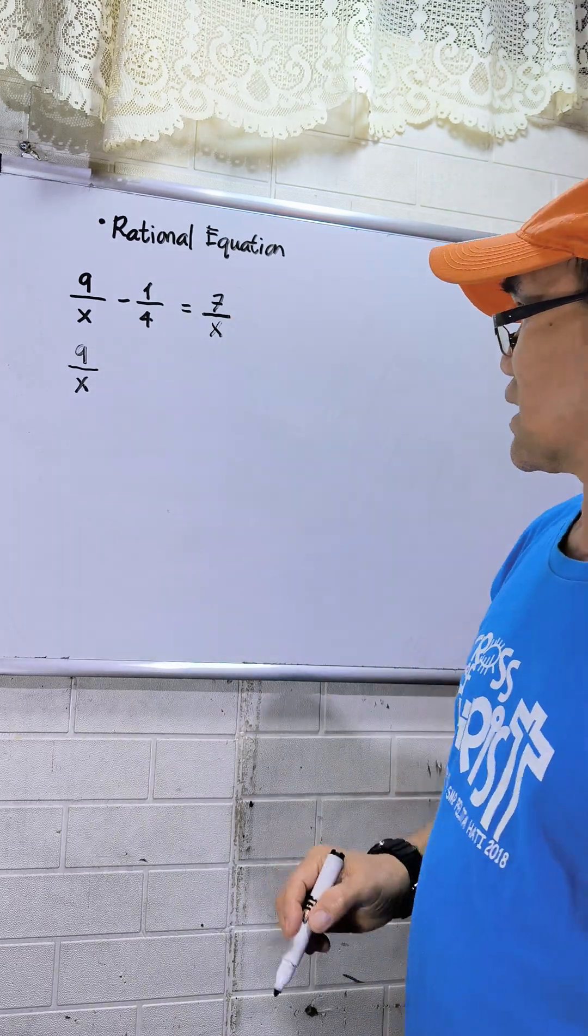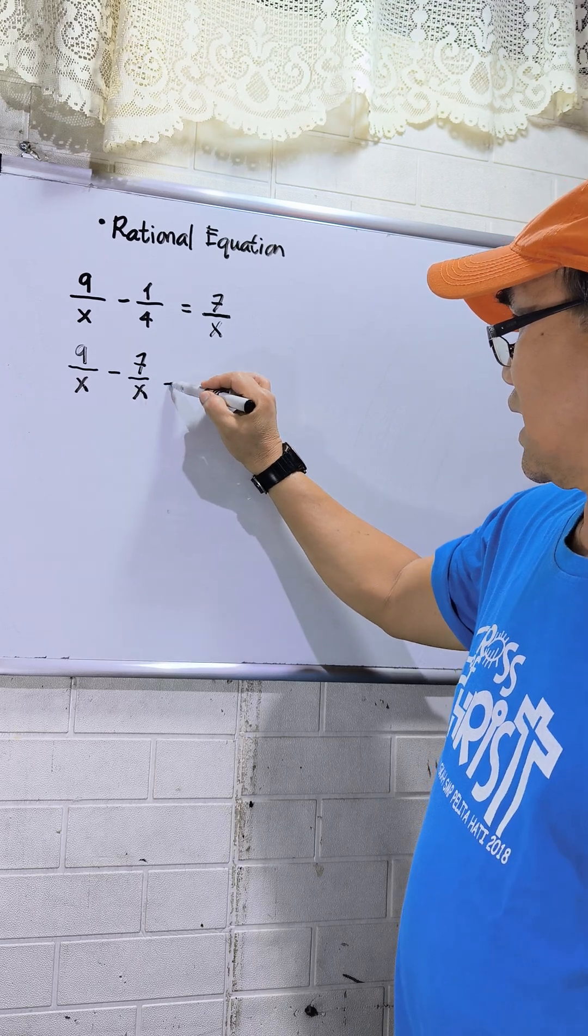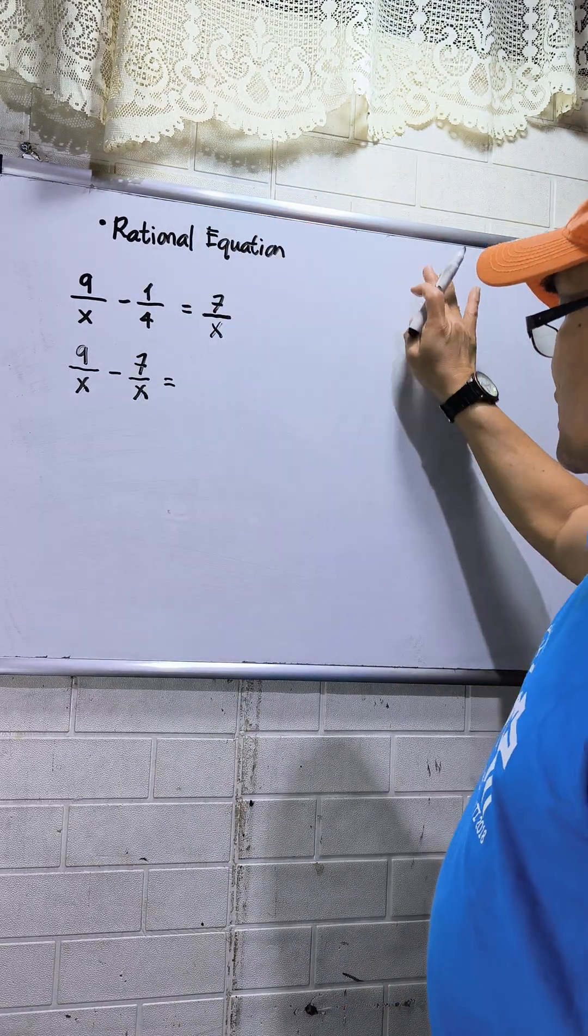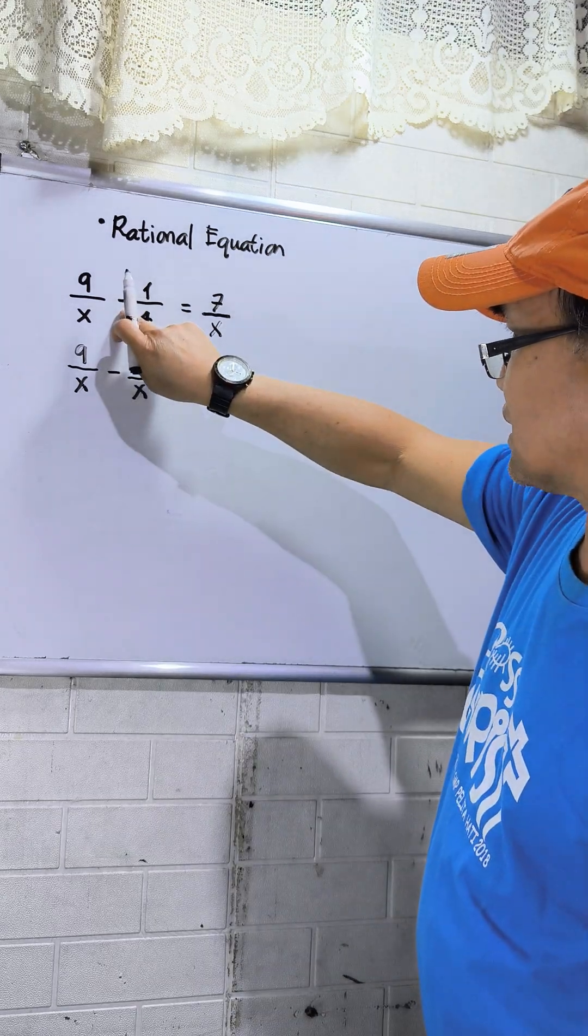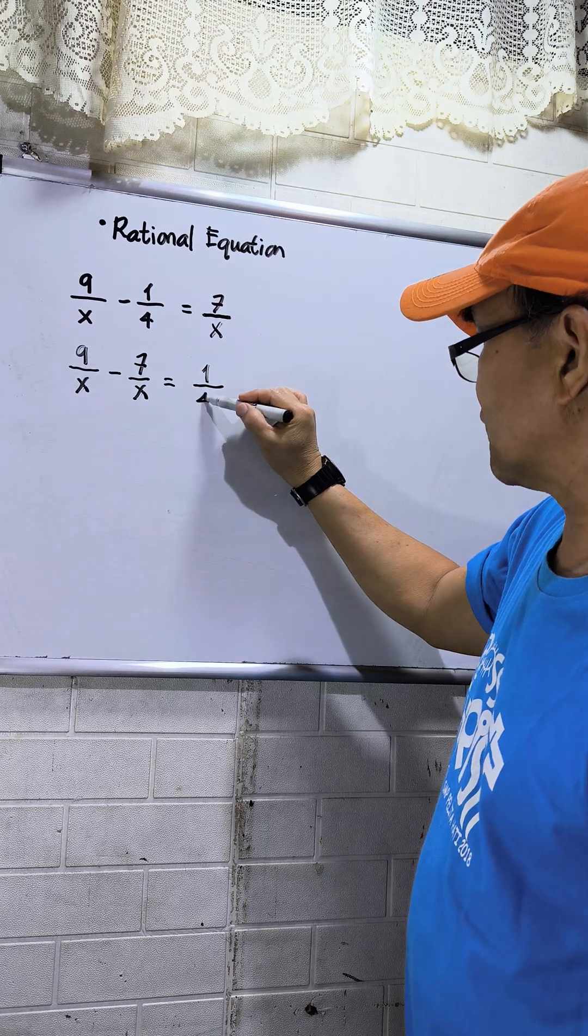Then I will transpose at the left side. So this will be minus 7 over x. Then this 1 over 4 that will be constant should be placed at the right side. Since this is negative, if we transpose at the right side, this will become positive 1 over 4.